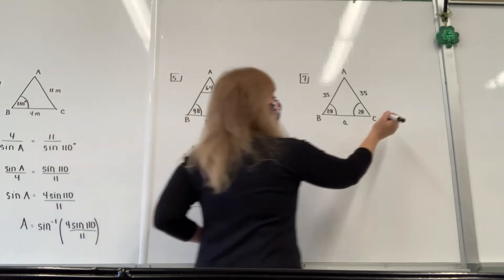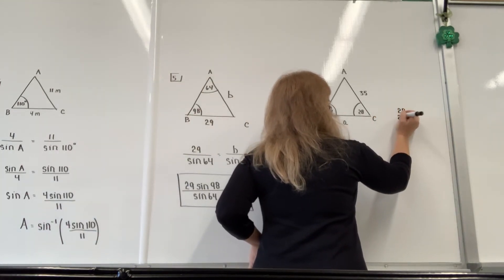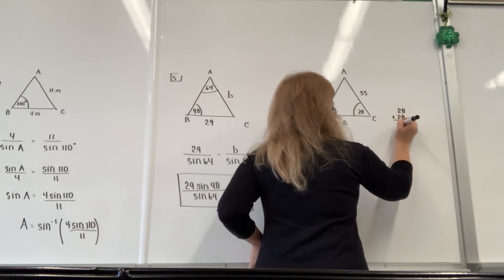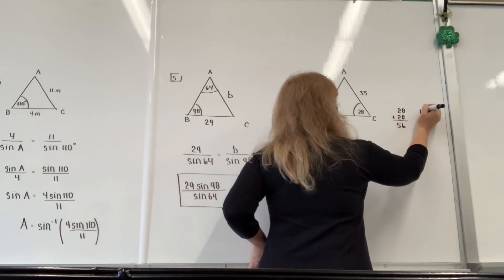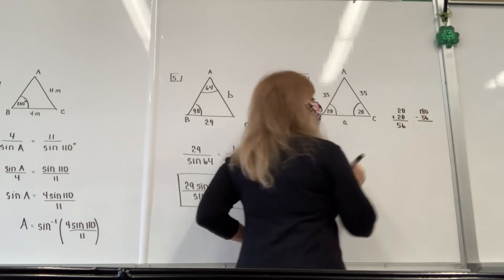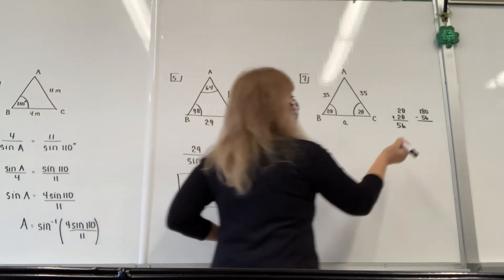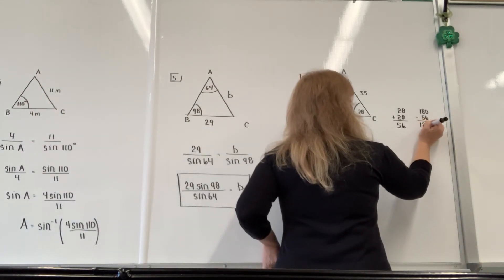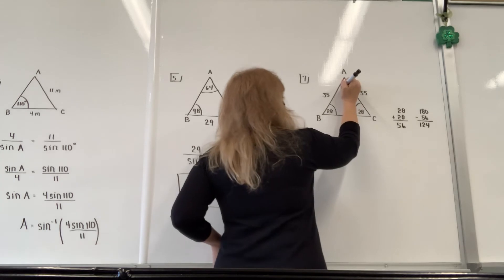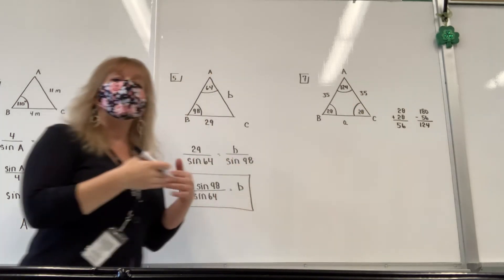28 plus 28. When you add them together, it's 56. So 28 and 28 gives me 56. And then when you do 180 minus 56, what do you get? Perfect, 124. That's the vertex angle. So I will put that in up here. Now you can actually answer the question to find lowercase a.